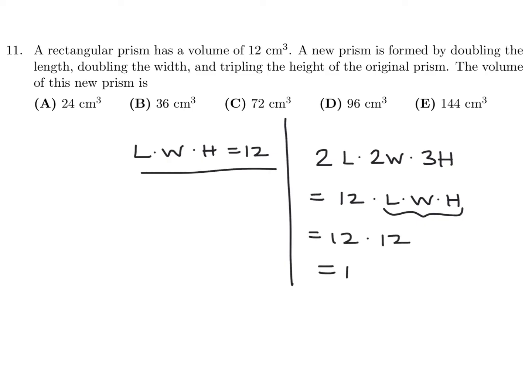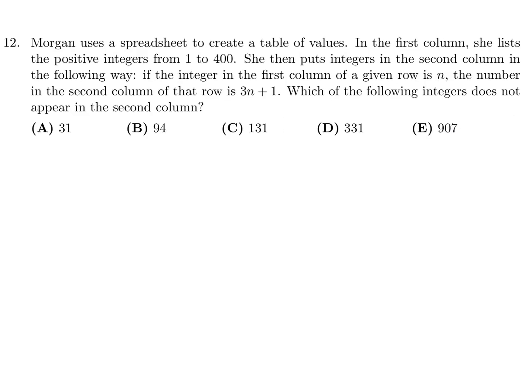Number 11, the answer is E. Morgan uses a spreadsheet to create a table of values. In the first column she lists the positive integers from 1 to 400. She puts integers in the second column such that if the integer in the first column is n, the number in the second column is 3n plus 1. Which of the following integers does not appear in the second column?